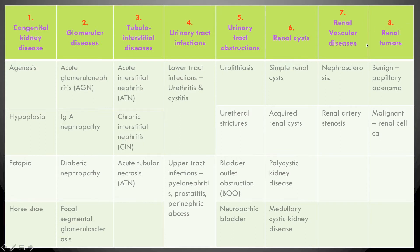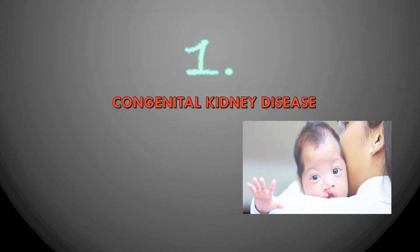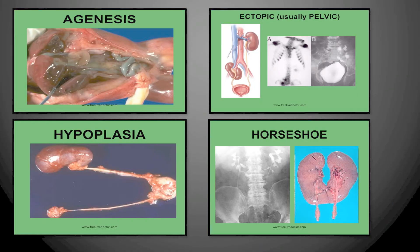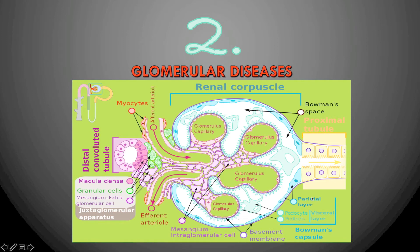Congenital kidney diseases include agenesis — where there are no kidneys at all and the fetus cannot survive — ectopic kidneys where the kidney is not in its normal position, hypoplasia where one kidney is underdeveloped, and horseshoe-shaped kidney where both kidneys are joined to each other.